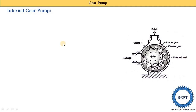The second type is the internal gear pump. From the name, we understand that in an internal gear pump, the two gears are internally meshed. One gear has external teeth and the second gear has internal teeth — that's why it is called internal gear. There is a crescent seal in the space between them. The outer part is the casing, and there is an inlet and outlet.